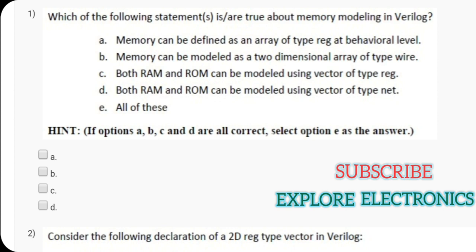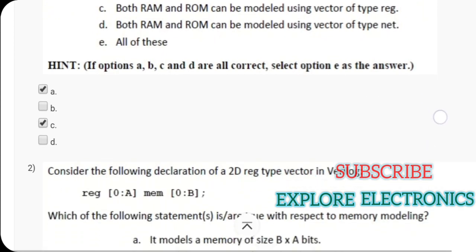Here the first option says memory can be defined as an array of type register at behavioral level. So option A is correct. And look at option C, both RAM and ROM can be modeled using vector of type register. Yes, we can model RAM and ROM using a vector type register. That is why answers A and C are correct here.